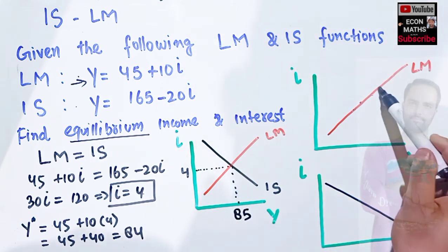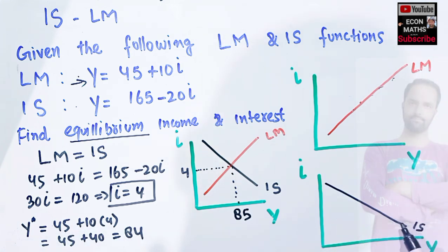LM shows us the money market equilibrium and IS shows us the goods market equilibrium. I hope I made myself clear in this video. Thank you.